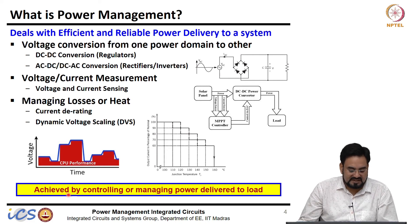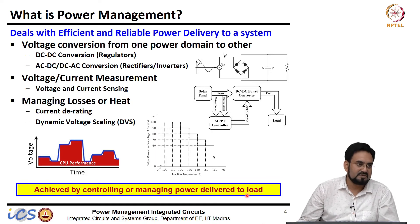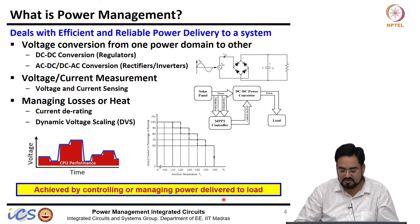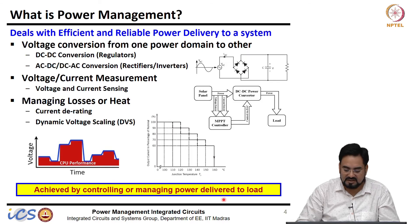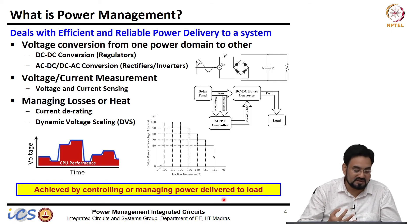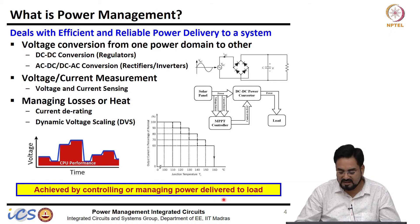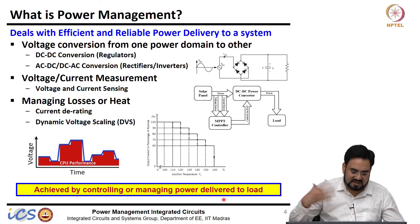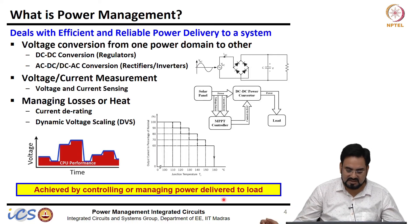Efficient power management is achieved by controlling or managing power delivered to the load. Depending upon the performance required, you change the power requirement or current — like in solar applications you want to operate at the maximum power point, so you measure both voltage and current and calculate the maximum power. Many different control techniques are used in order to achieve this efficient power management.